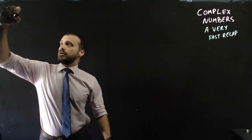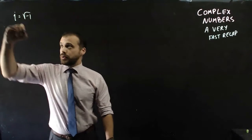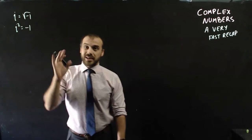A very fast recap here. Here we go. i is equal to the square root of negative 1. If we were to square both sides, we get i squared, which is just negative 1.